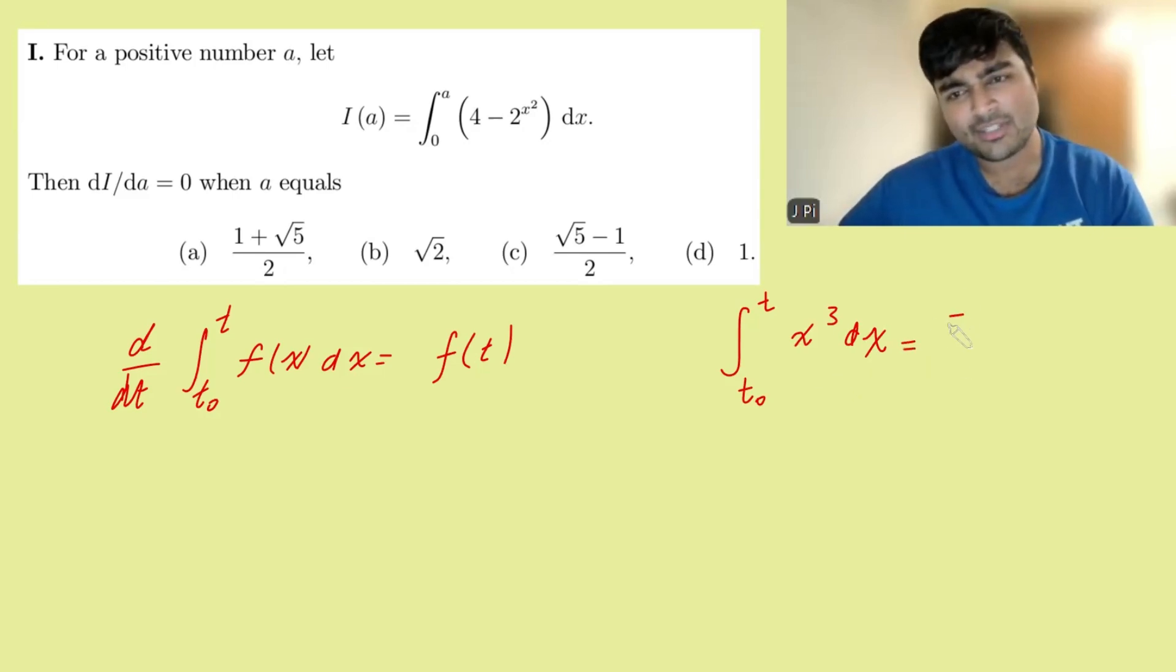Well, if I integrate x³, that's just going to be ¼x⁴ between t and t₀, and that's going to be ¼t⁴ minus ¼t₀⁴.